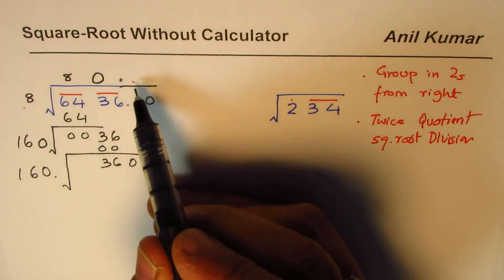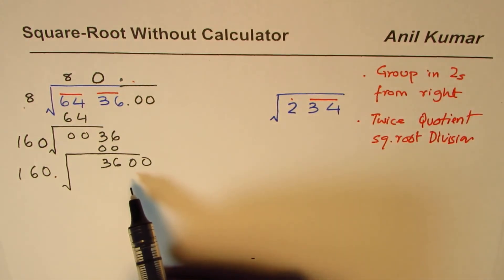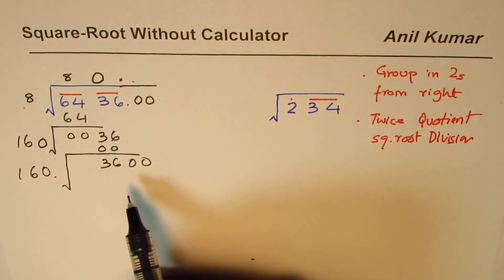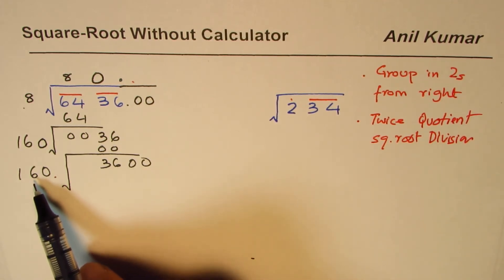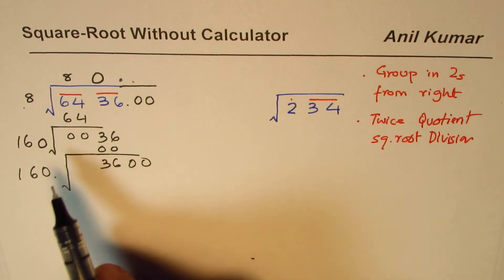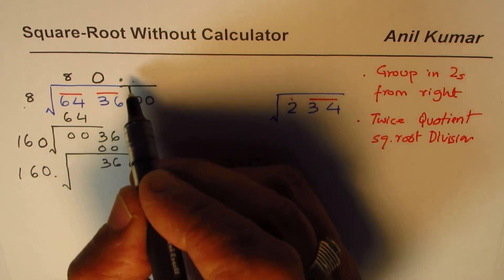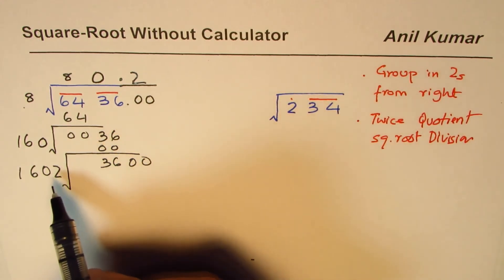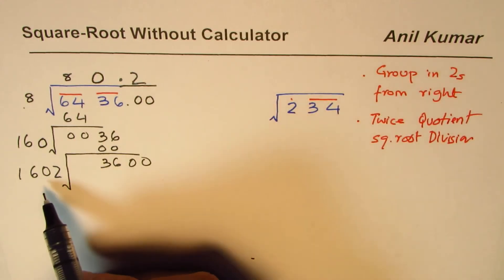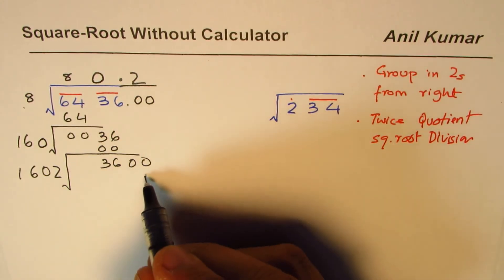In this case if I write 2 here, then 2 times 6 is 12, plus 2 is 1, so 2 can work out. We can write 2 here in both divisor and quotient and continue with the process.